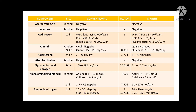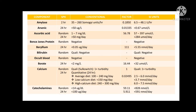For albumin, for random samples, you can only test qualitatively, and the expected result is negative. While for 24-hour urine samples, it can be done quantitatively. The expected results under conventional units is 15 to 150 milligrams per day. The conversion factor used is 0.001, giving it an SI value of 0.015 to 0.150 grams per day.